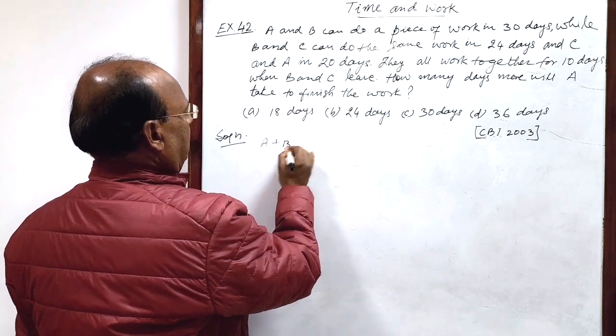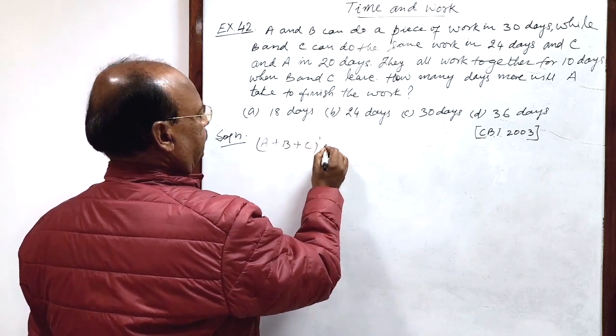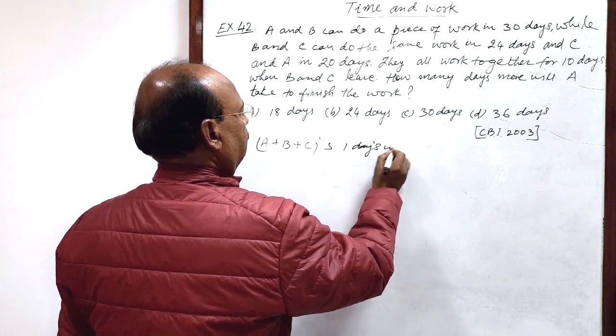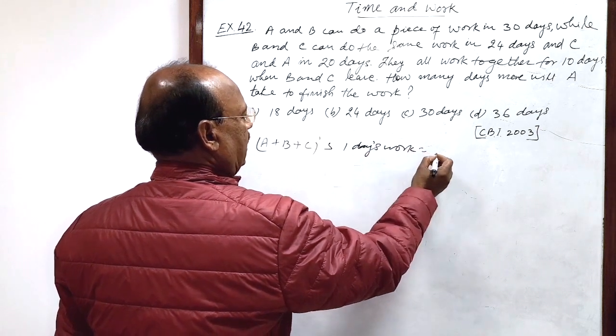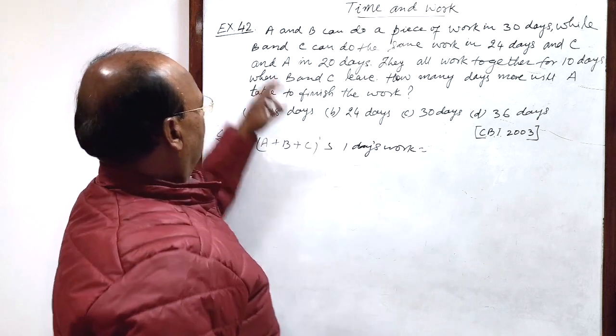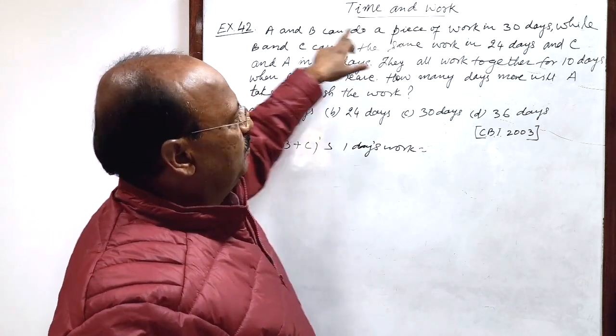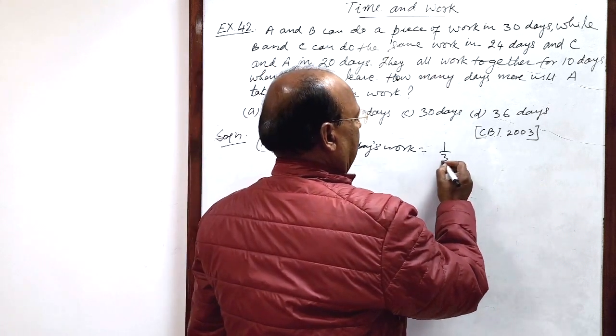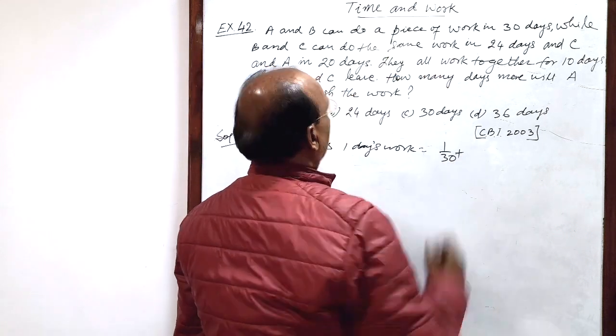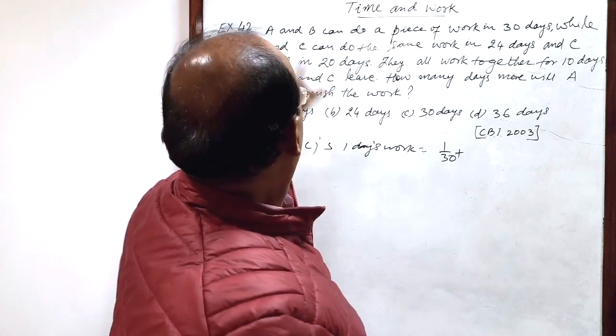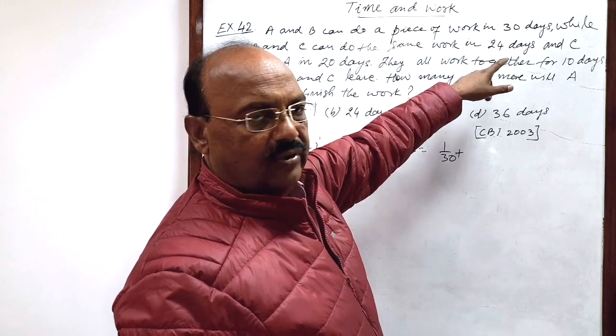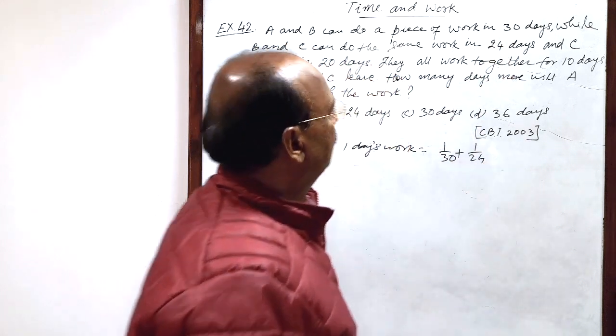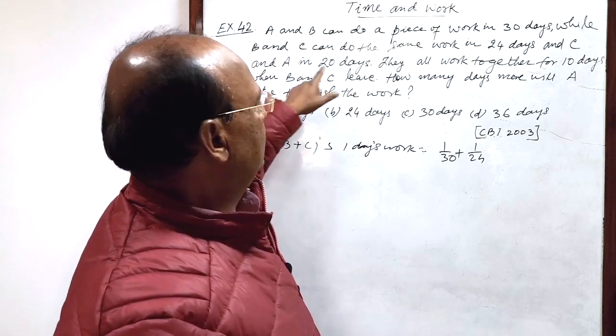Let us see A plus B plus C's one day's work, directly we can write here. How much? A and B can do a piece of work in 30 days. So, in one day, this is 1 by 30. Similarly, B and C can do the same work in 24 days, so in one day, that will be 1 by 24.